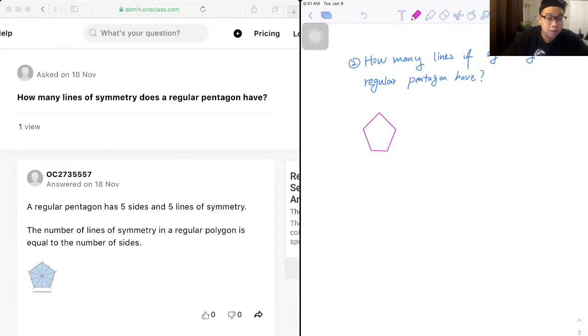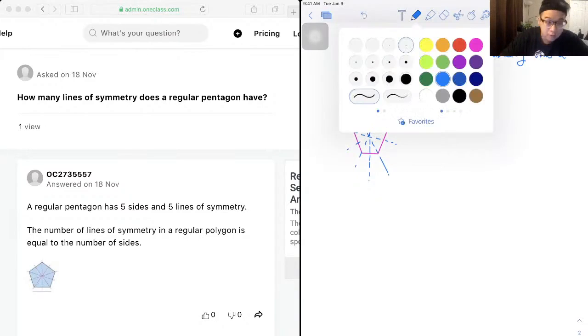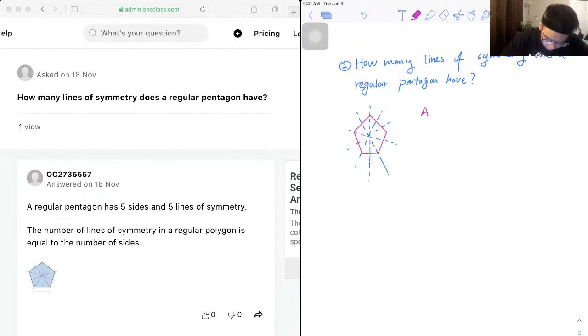So if we draw the lines of symmetry, they are one, two, and one, two, three, four, and five.